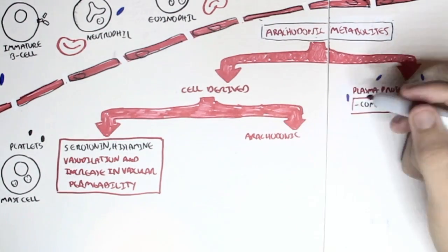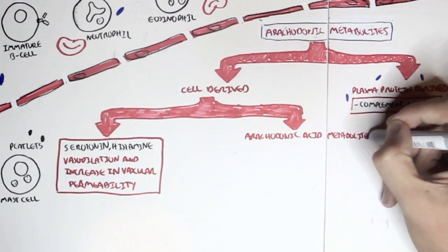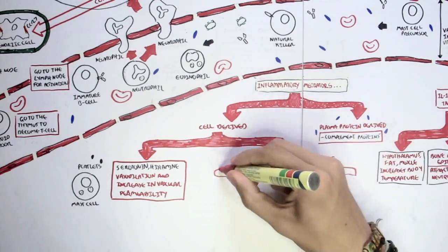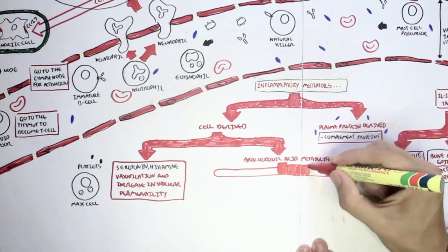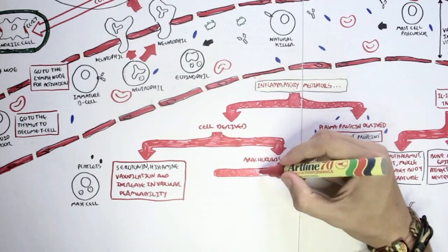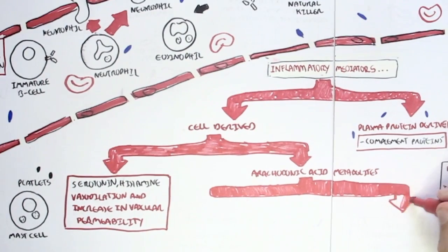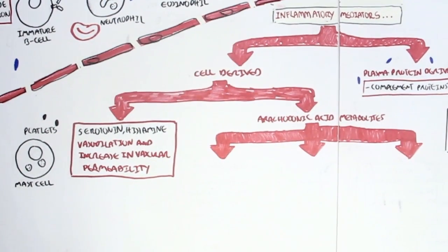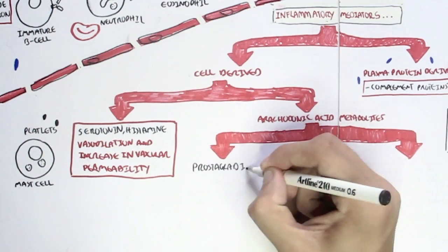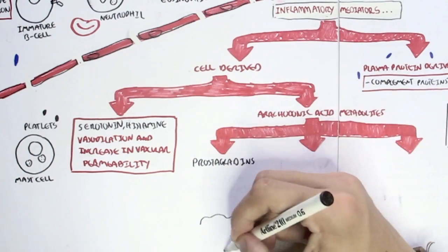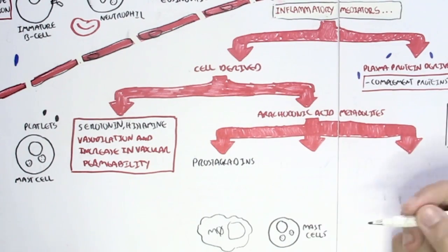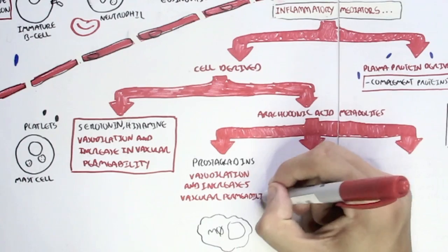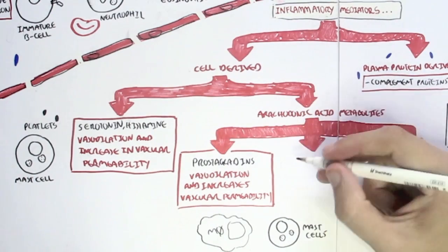Now, cell-derived inflammatory mediators, another important group, are what's called the arachidonic acid metabolites. And this group is very important. And there are many types of arachidonic acid metabolites. But there are three main groups. We have prostaglandins, which are usually secreted by macrophages and mast cells. And they cause vasodilation and also increase vascular permeability.